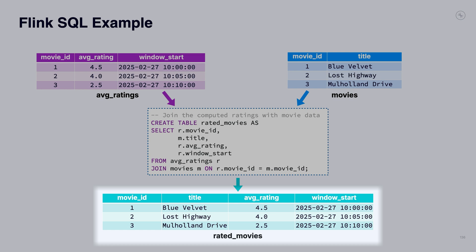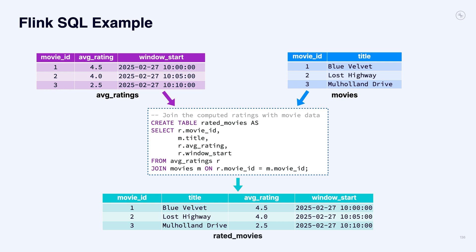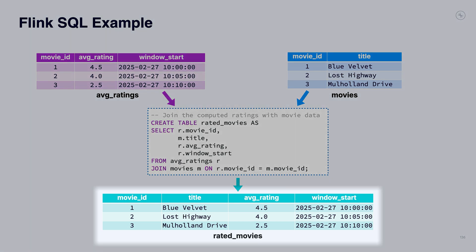Looks like we have a David Lynch fan here, but not so much into Mulholland Drive — I wonder what happened there. Anyway, that's a quick view of what you can do with Flink SQL on live streaming data. This all started with that topic called raw_ratings — at some volume, maybe extreme volume — ratings flowing in, being averaged, and produced into this table for our use.